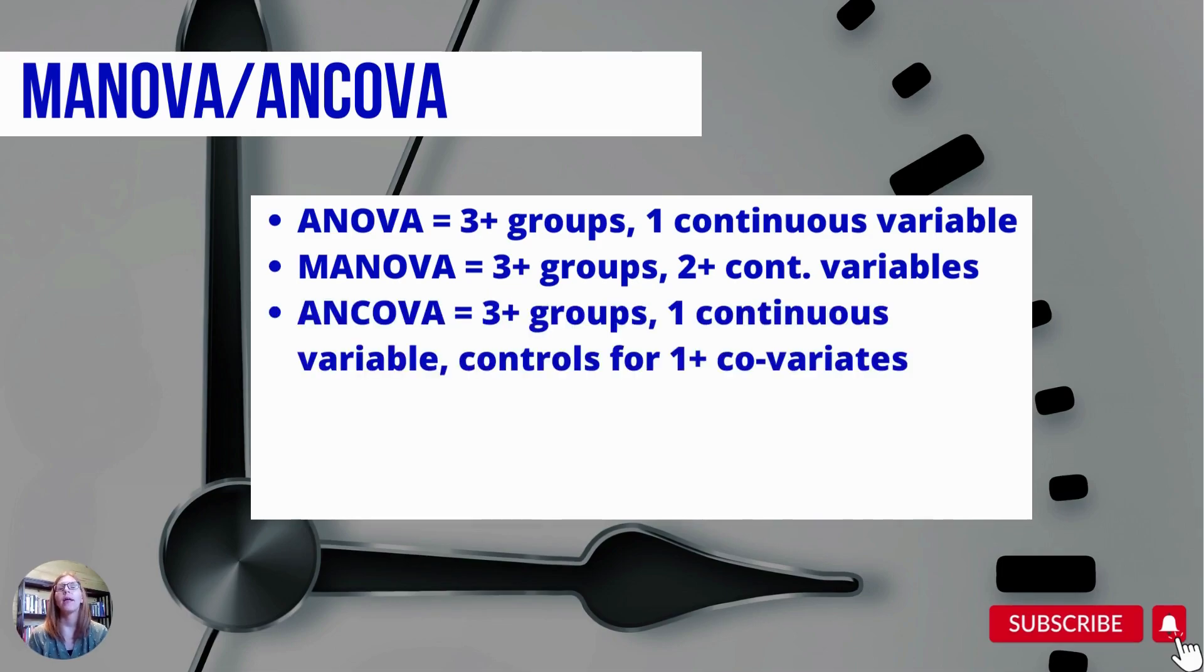And ANCOVA is back to ANOVA here where it's three or more groups and one continuous variable, but it controls for one or more covariates. And these are variables that you want to control as if everyone had the same score on that particular variable. So if that were equal, and we adjust the scores that we're comparing, then is there a difference between the groups.